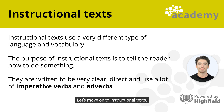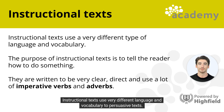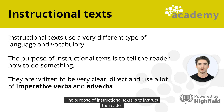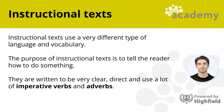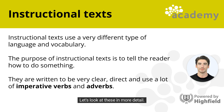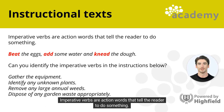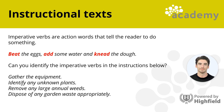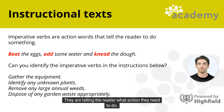Let's move on to instructional texts. Instructional texts use very different language and vocabulary to persuasive texts. Their purpose is to instruct the reader or tell them how to do something. Because of this, instructions need to be clear and direct — they use imperative verbs and adverbs to achieve this. Imperative verbs are action words that tell the reader to do something; they are command or instruction words. For example, beat the eggs, add some water, and knead the dough. The imperative verbs are beat, add, and knead — they tell the reader what action to perform.